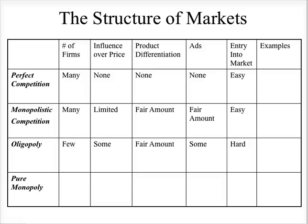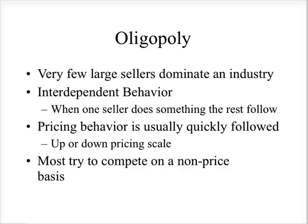The next market structure is an oligopoly. There are only a few firms this time. They have some influence over the price, there's a fair amount of product differentiation, some advertising used, and the key here is that it's very hard to enter an oligopoly market structure. With an oligopoly, there are a few large sellers that dominate the industry, and they have interdependent behavior — when one seller does something, the rest are going to follow. Pricing behavior is usually quickly followed, so if one company lowers or raises their price, other companies will very quickly match it.